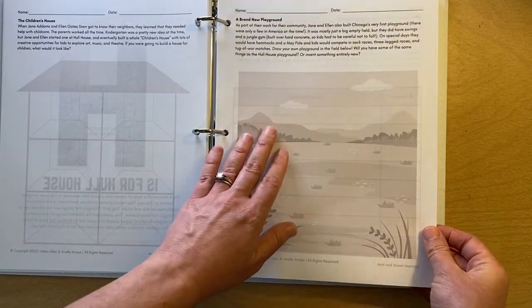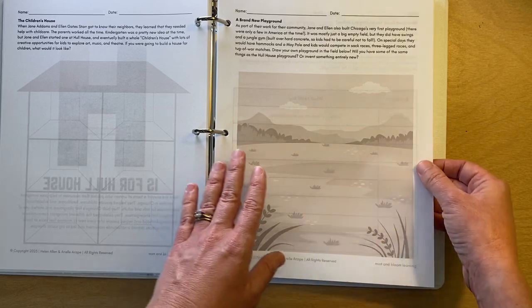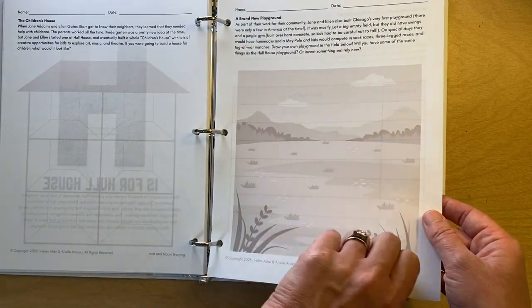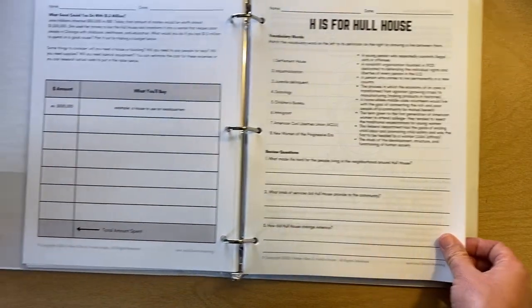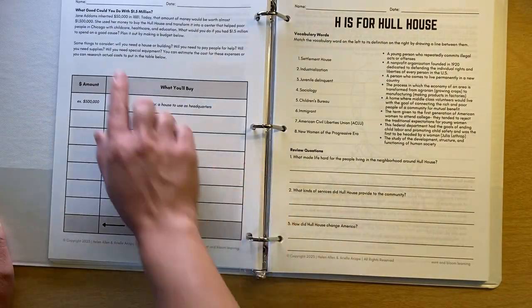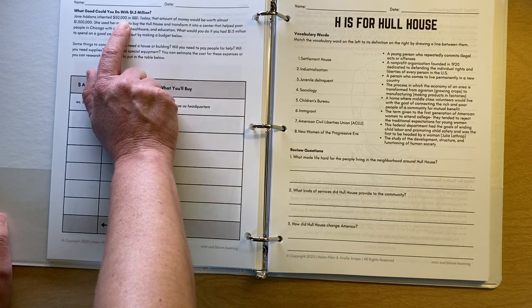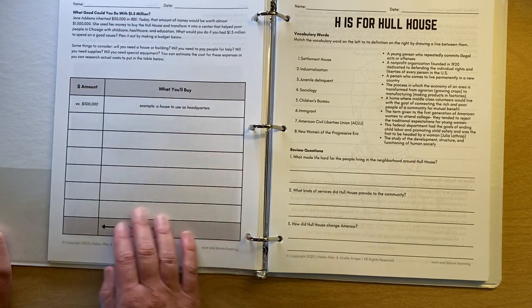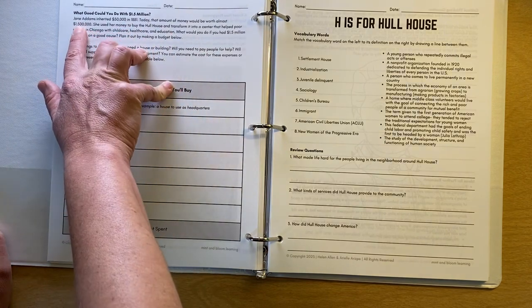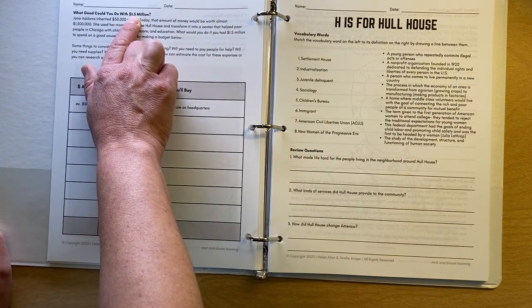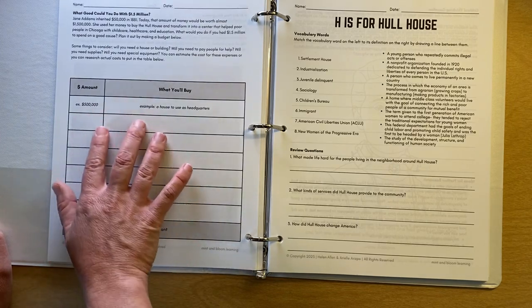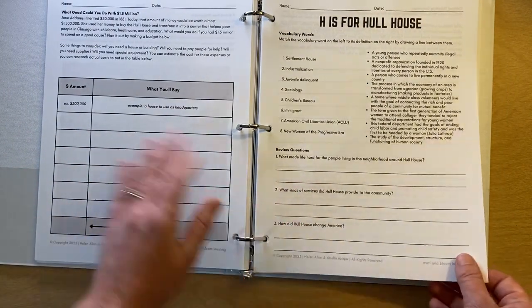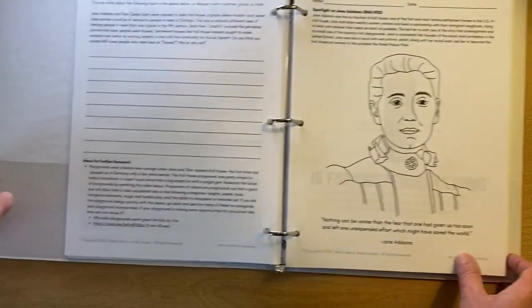Also Hull House had one of Chicago's very, and they were very new idea in America, first playground. So you can invent a playground and draw whatever things you want in yours. Here's an activity for kids that don't like to draw as much. We talk about how Jane Adams, who started Hull House, she inherited money and she used that to make her dream a reality. And so if you had the same amount of money, what she inherited then would be worth 1.5 million today. If you had that amount of money, think about a budget for what you would buy with it to do some good in the world. And so the budget activity that kids love.